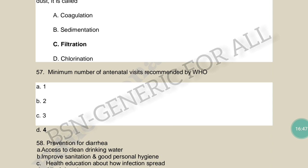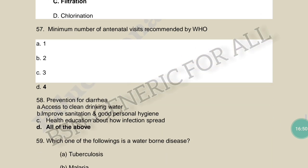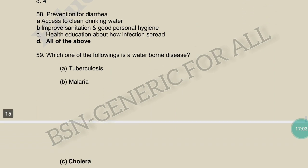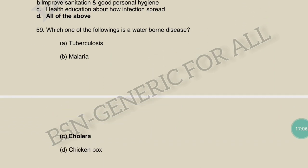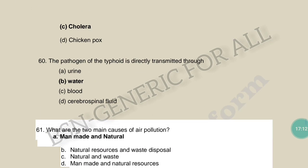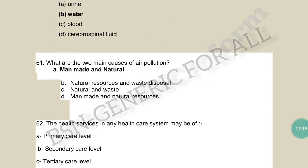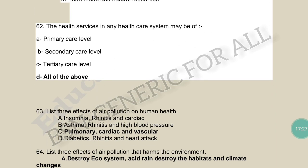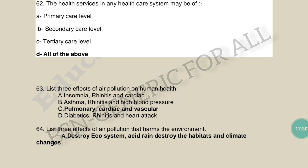Prevention for diarrhea includes: access to clean drinking water, improved sanitation, good personal hygiene, and health education about how infection spreads — all of the above. Which of the following is a waterborne disease? Cholera is the waterborne disease. The pathogen of typhoid is transmitted through water. The two main causes of air pollution are man-made and natural causes.